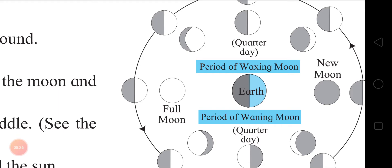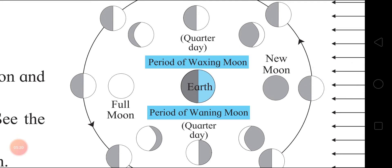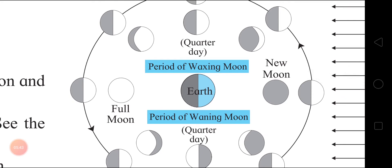Second: New moon day. On the new moon day, the sun's light does not fall on the portion of the moon facing the Earth. Therefore, the moon disc appears to be dark and invisible.